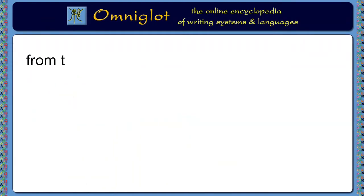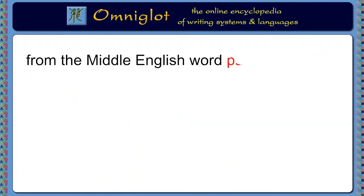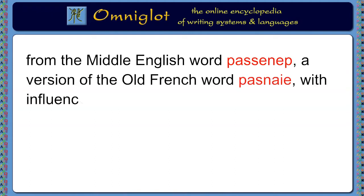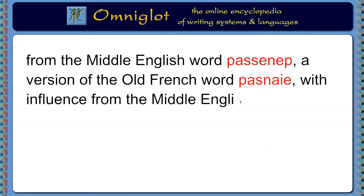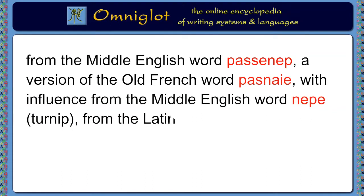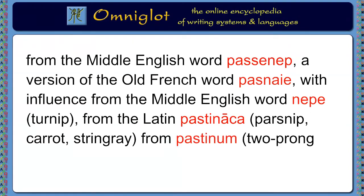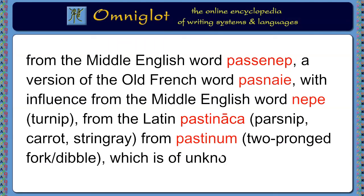It comes from the Middle English word parsnip, which is a version of the Old French word pasnaie, with influence from the Middle English word nepe, or turnip. And that comes from the Latin word pastinaca, meaning parsnip, carrot, or stingray, from pastinum, meaning a two-pronged fork or dibble, and the origins of that word are unknown.